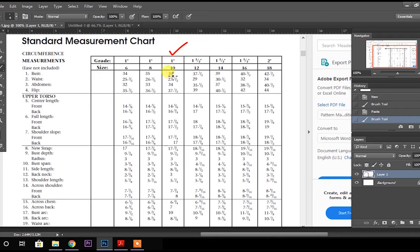If you see all the measurements coming underneath size 10, in which you are seeing number 1 bust 36, waist 27 and a half, abdomen 34, these are all the measurements that you are seeing here.